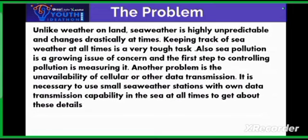We are here to discuss the problems of our project. Unlike weather on land, sea weather is highly unpredictable and changes drastically at times, making it very tough to track at all times. Sea pollution is also a growing concern, and the first step to controlling pollution is measuring it. Another problem is the unavailability of cellular or other data transmission, making it necessary to use small sea weather stations with their own data transmission capability.